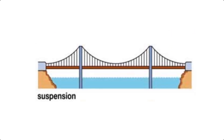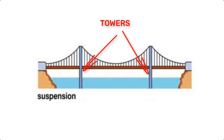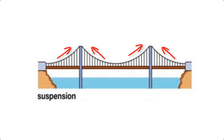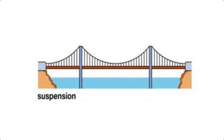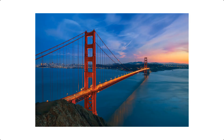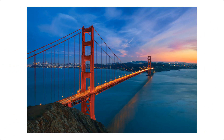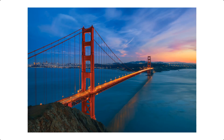Moving on to suspension bridges. Structurally, these bridges are supported by cables suspended between towers. The main cables carry the loads and distribute them to the towers, which transfer it to the ground. This design allows for spanning very long distances, making them ideal for large bodies of water or deep valleys. They're engineering feats and can support extremely heavy loads.